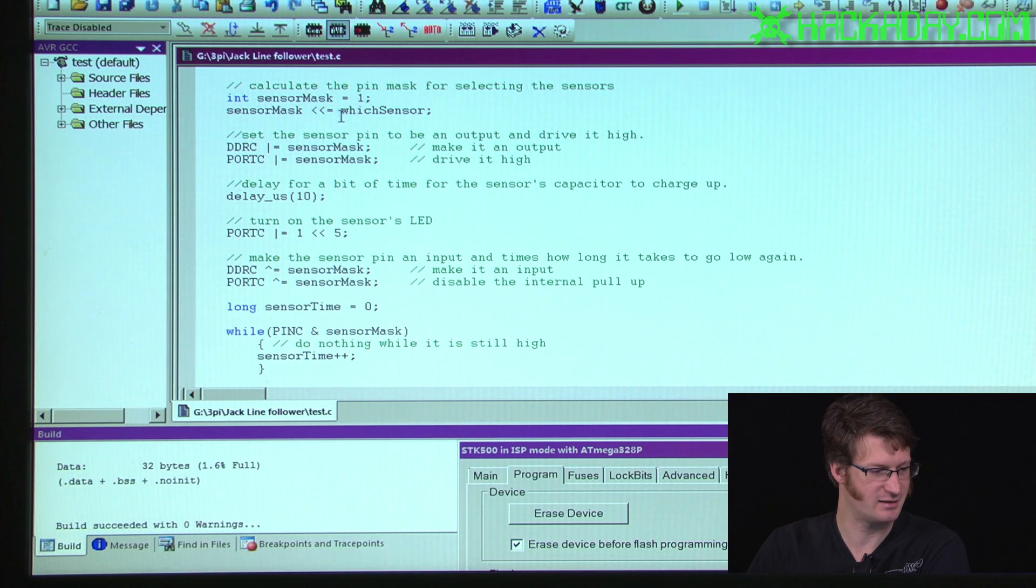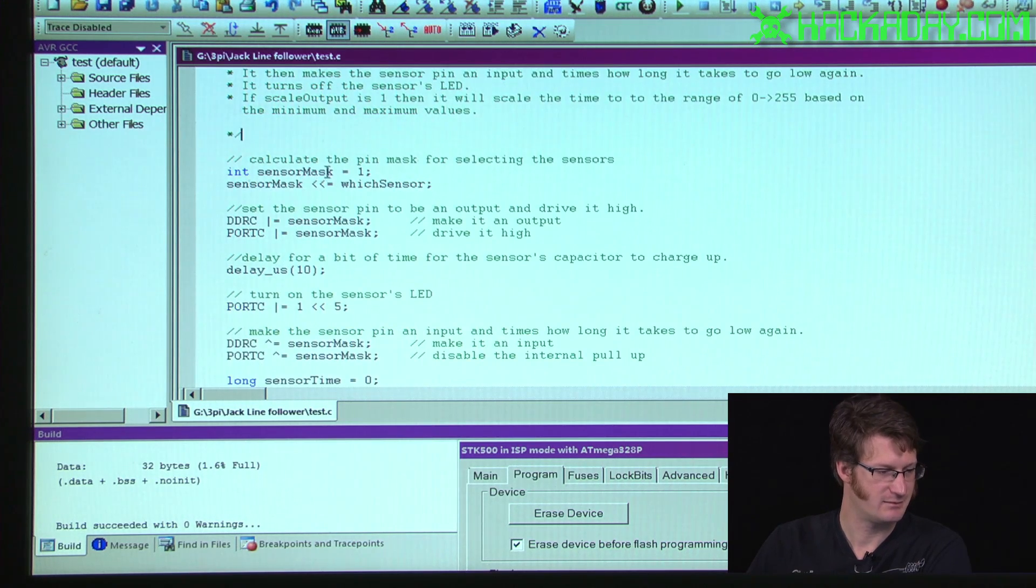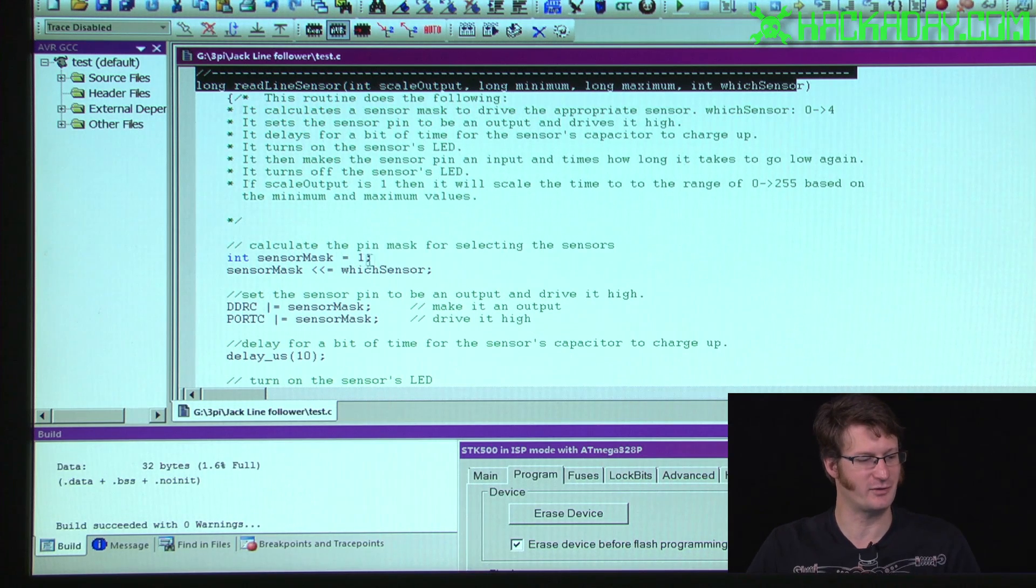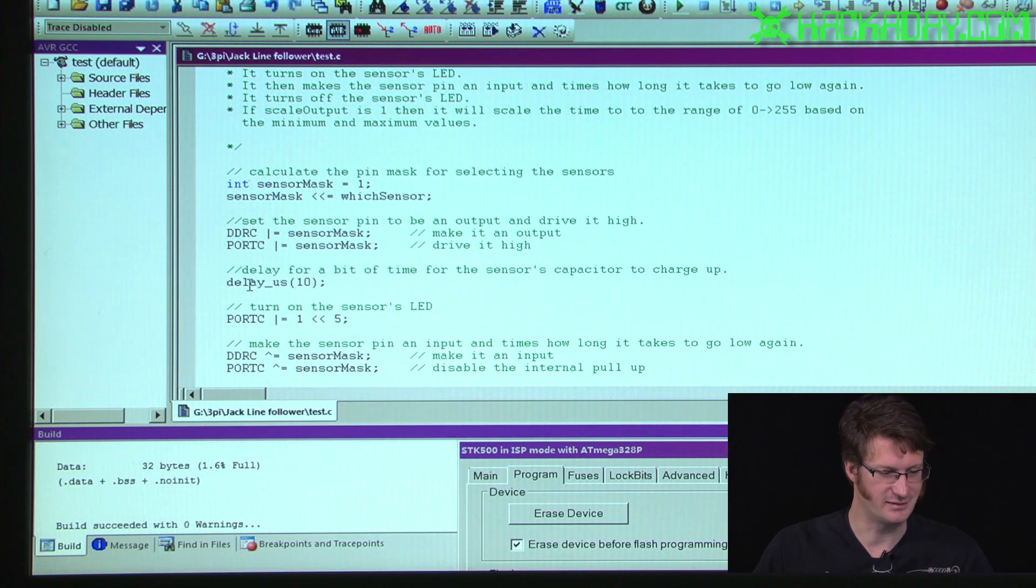But pretty much I take my sensor mask and I take the value of which sensor and I shift it, I write one to it and then I shift it over which sensor times. Which, when I write that to the output port, it allows me to drive that pin out. I delay for a little bit of time to charge up the capacitor. In this case I'm only delaying for 10 microseconds, so it's not going to take very long.